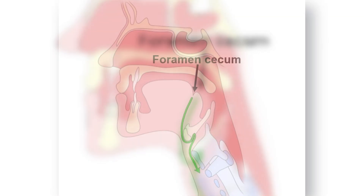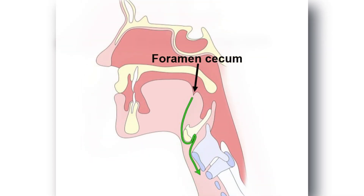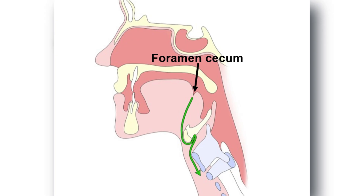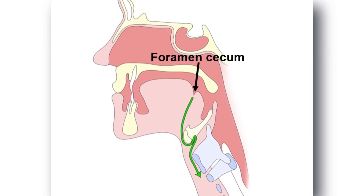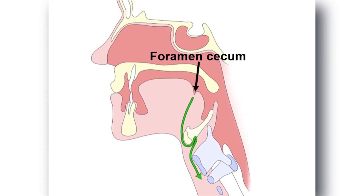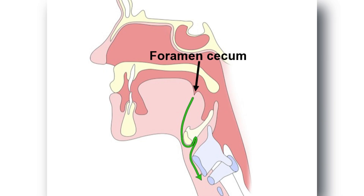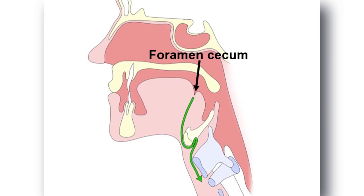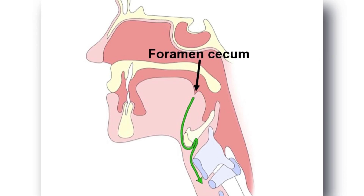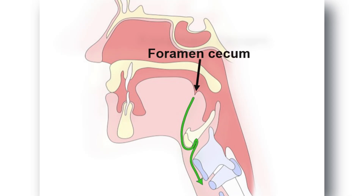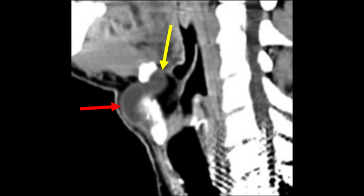They can be located anywhere from the base of the tongue at the foramen cecum to the lower anterior neck below the hyoid bone. 50% are found at the level of the hyoid, 20-25% in the suprahyoid region, and another 25% in the infrahyoid region. In our patient, the cyst is infrahyoid and midline with extension into the preepiglottic space, an unusual but recognized finding.